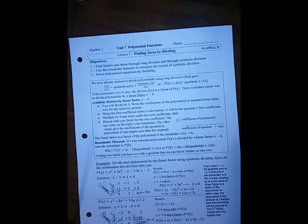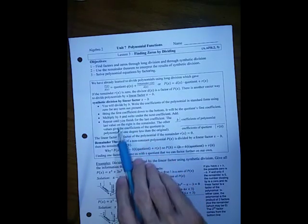We bring the first coefficient down to the bottom, then multiply by the one we're dividing by. Write that under the next coefficient and add those. Then multiply again, write that under the next one and add, multiply, write it under the next one and add until we've reached the end of the row.